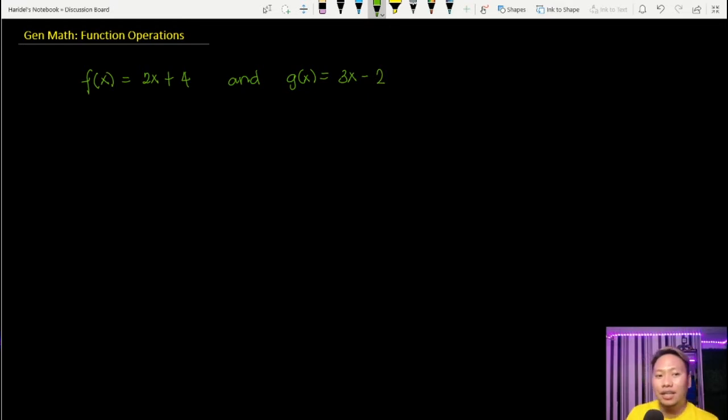Let's take a look at adding the two functions. When we add two functions, this is very easy. Just add the two functions that you see in the given. So this is equal to 2x + 4, the first function, and then you add the second function, which is 3x - 2.